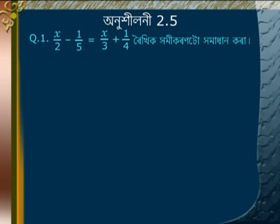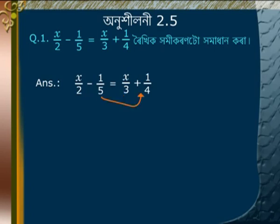Find the value of x. If x/2 minus 1/5 is equal to x/3 plus 1/4, transposing x/3 to the left side: x/2 minus x/3 is equal to 1/4 plus 1/5.